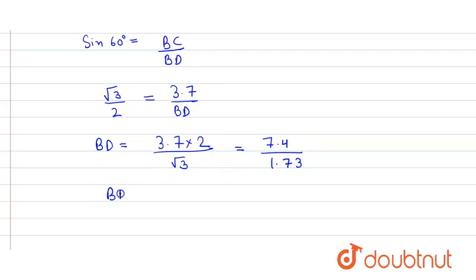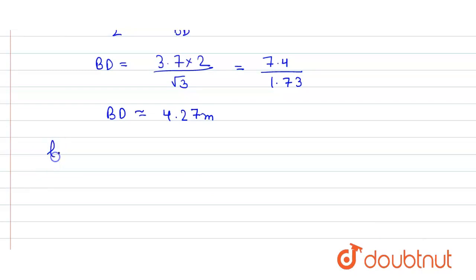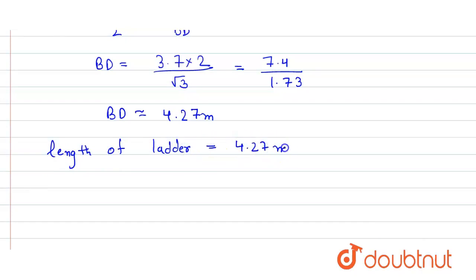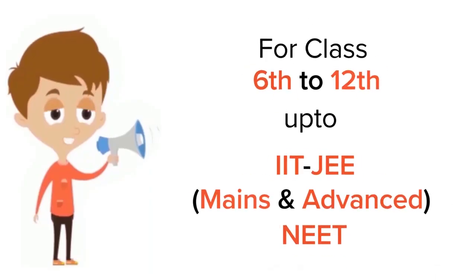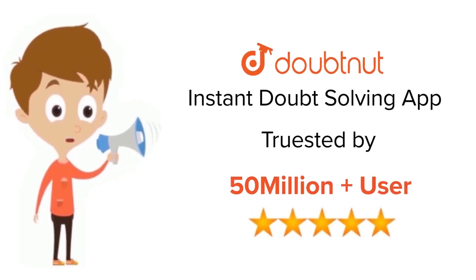Dividing the values, we get the value of BD to be approximately 4.27 meters. So the length of the ladder is equal to 4.27 meters. That's our answer. For class 6 to 12, IIT JEE and NEET level, trusted by more than five crore students — download Doubtnut today.